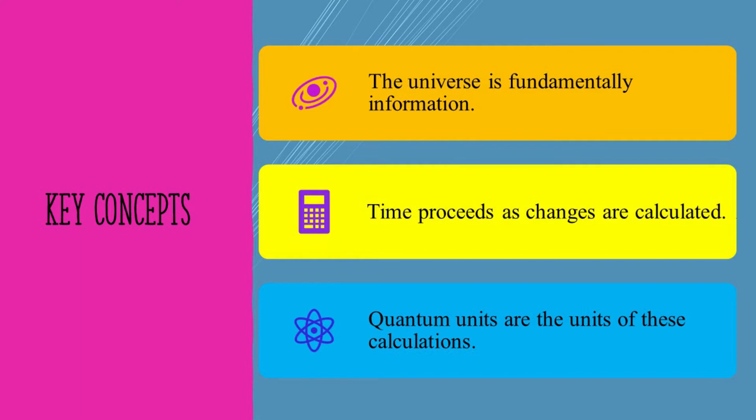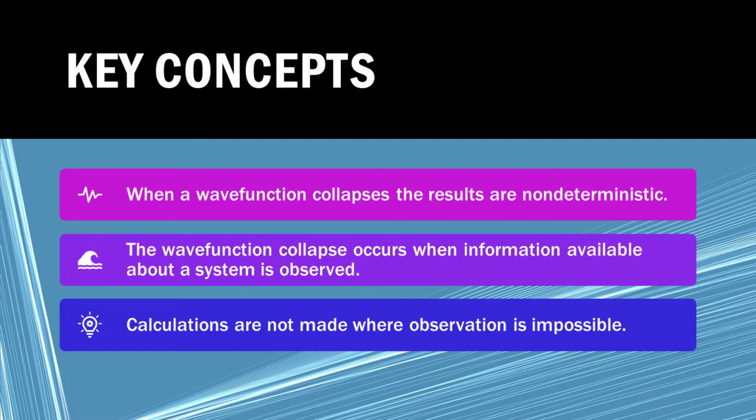These key concepts are: the universe is fundamentally information, time proceeds as changes are calculated, quantum units are the units of these calculations, when a wave function collapses the results are non-deterministic, the wave function collapse occurs when information available about a system is observed, and calculations are not made where observation is impossible.